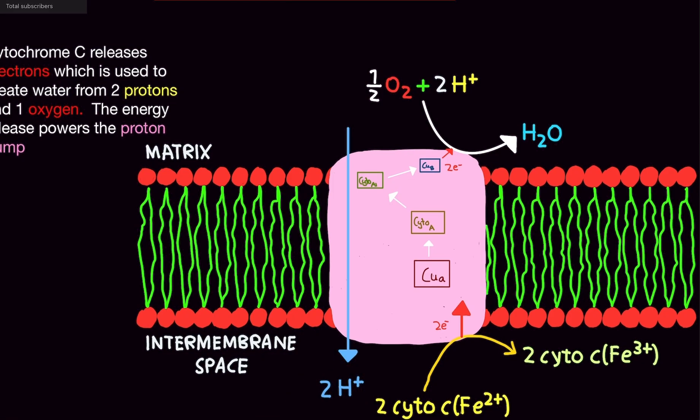So once again, when cytochrome C releases the two electrons, it basically turbocharges this entire complex, Complex IV, because there's just so much free energy being released. It basically propels protons from the matrix to the intermembrane space, which is great.